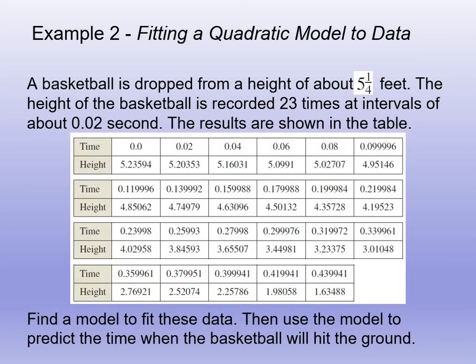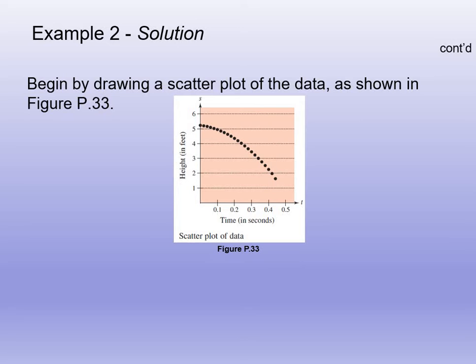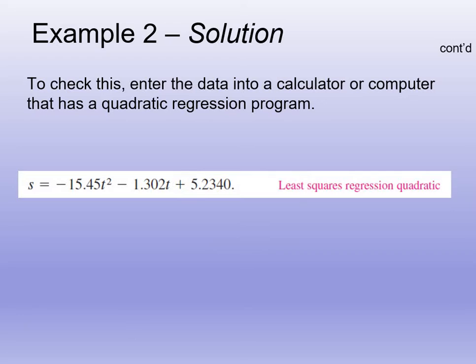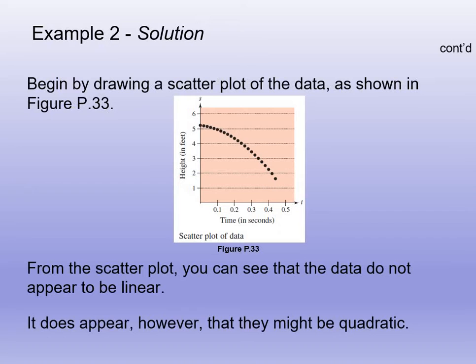Same as before, you're going to hit stat. You're going to go over to calculate, and you're going to go down to number 5, quadratic regression. You're going to do second 1 to put L1, and then comma, second 2 to put L2, and hit enter. And then it should give you the quadratic equation. Your data should give you something similar to this, S equals negative 15.45 T squared minus 1.302 T plus 5.2340.